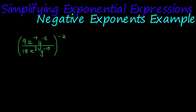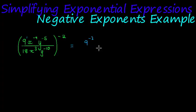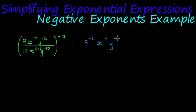So that's what I'll do here. The negative 2 will be multiplied with every factor inside. The 9 has an exponent of 1, so it becomes 9 to the power of negative 2. The x to the power of negative 9 multiplied by negative 2 becomes x to the power of positive 18. The y to the power of 5 becomes y to the power of 10, since negative 5 times negative 2 is positive 10.